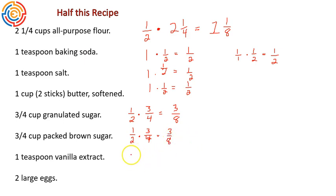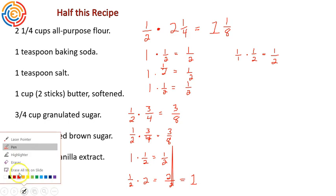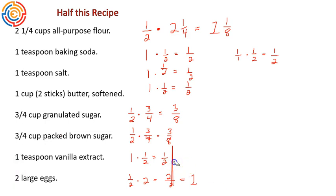Half of one teaspoon is one times one-half, which will give us one-half. Half of two large eggs, one-half of two, gives us two over two, and that simplifies down to being one. In other words, if you're halving a recipe and it calls for two eggs, you'll put in one egg.